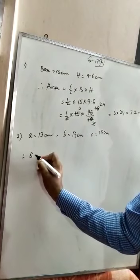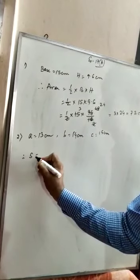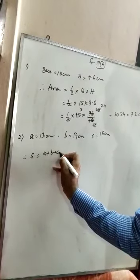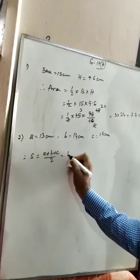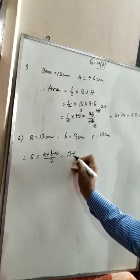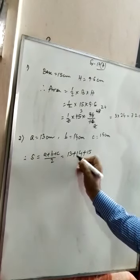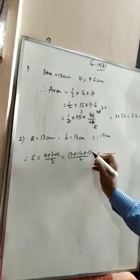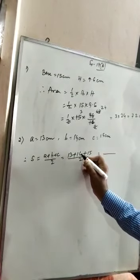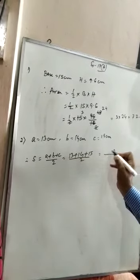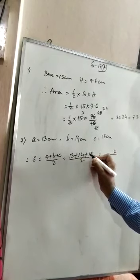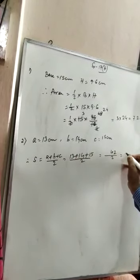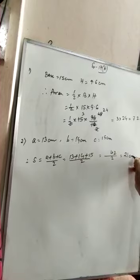Therefore, we have to find out the semi-perimeter, denoted by S. S equal to A plus B plus C divided by 2, that is 13 plus 14 plus 15 divided by 2, equal to 42 divided by 2, that is 21 cm.